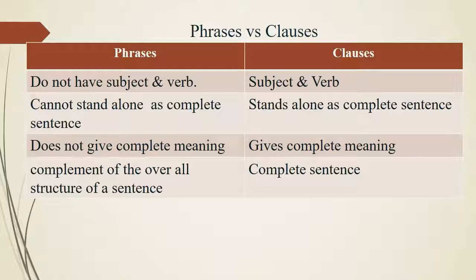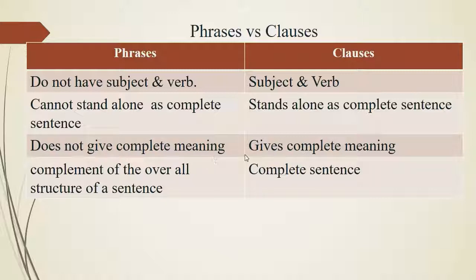In the last couple of slides, we talked about phrases and clauses. Now let's discuss the differences between these two terms. Phrases do not have a subject and verb; in contrast, clauses have a subject and verb. Phrases cannot stand alone as a complete sentence; however, clauses can stand alone as a complete sentence. Phrases do not give complete meaning; in contrast, clauses give complete meaning. Phrases are components of the overall structure of a sentence, but clauses can be complete sentences.